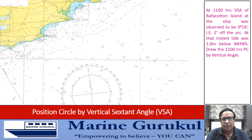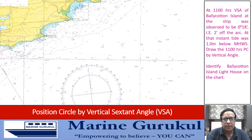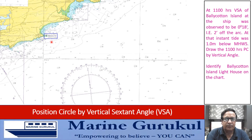Let's learn drawing of a position circle by vertical angle through this simple example. At 1100 hours, the vertical sextant angle of Belly Cotton Island at the ship was observed to be 0 degrees 18 minutes. Index error: 2 minutes off the arc. At that instant, the tide was 1 meter below mean high water spring. Draw the 1100-hour position circle by vertical angle. First and foremost, we identify the Belly Cotton Island light on the chart.